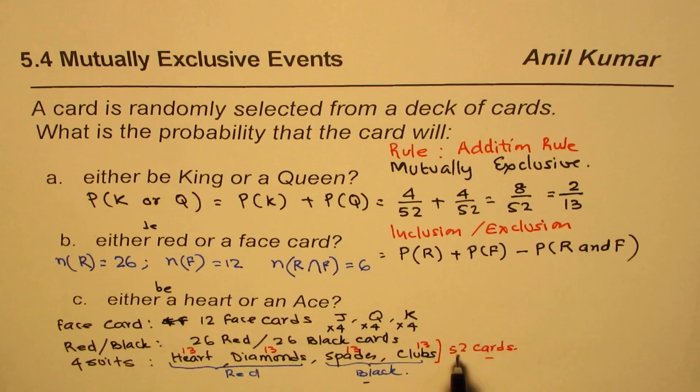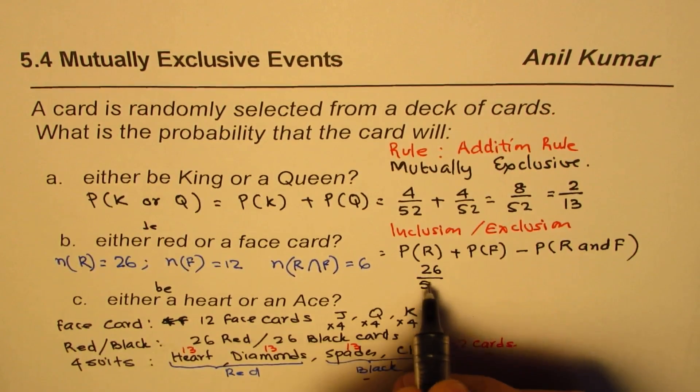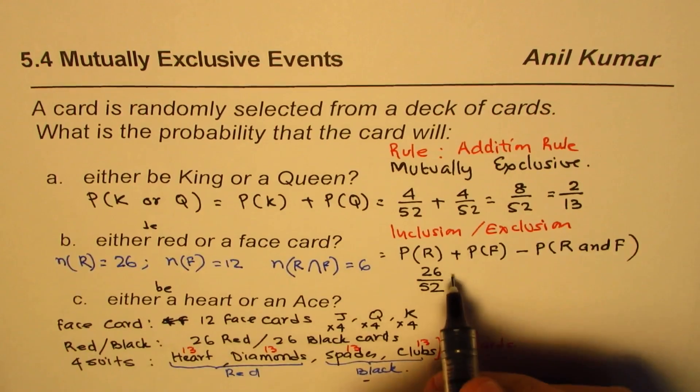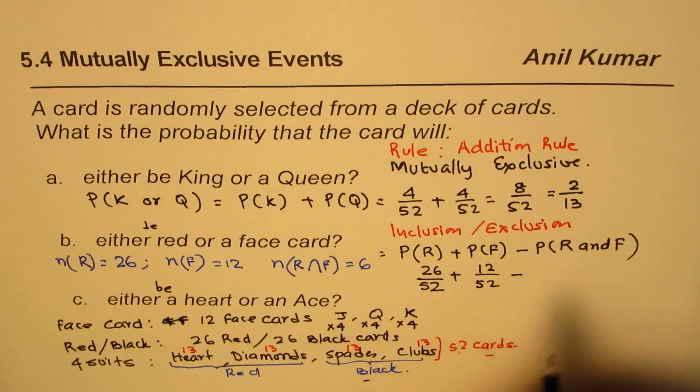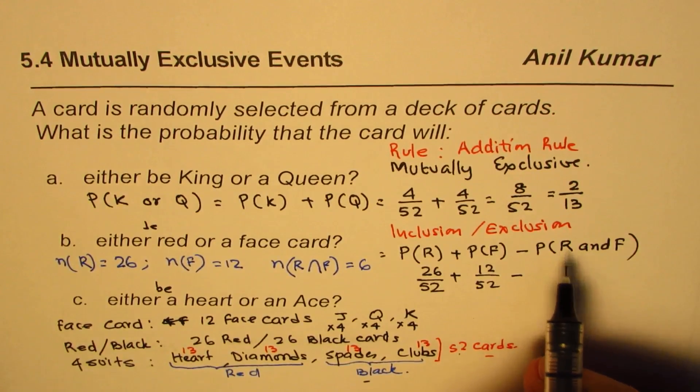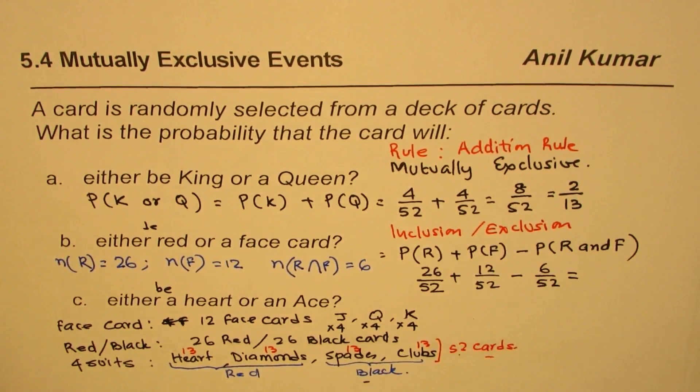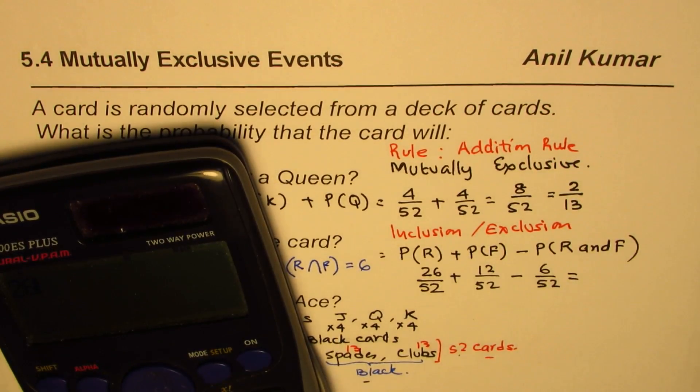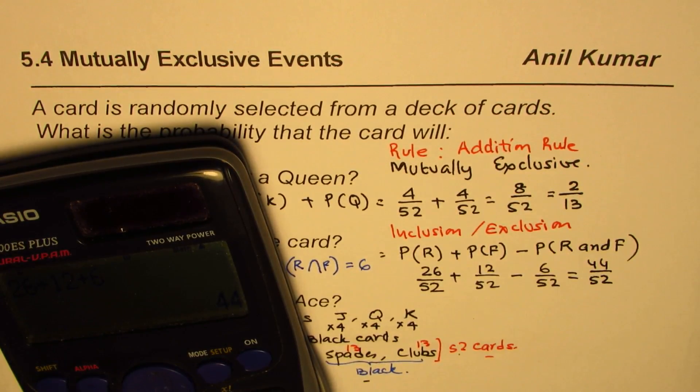Since there are 52 cards in all, the probability of red cards is 26 over 52, plus the face cards are 12, so 12 over 52, take away which are both red and face cards, 6 out of 52. We can add 26 plus 12 minus 6 equals 32—wait, that's 44 over 52.